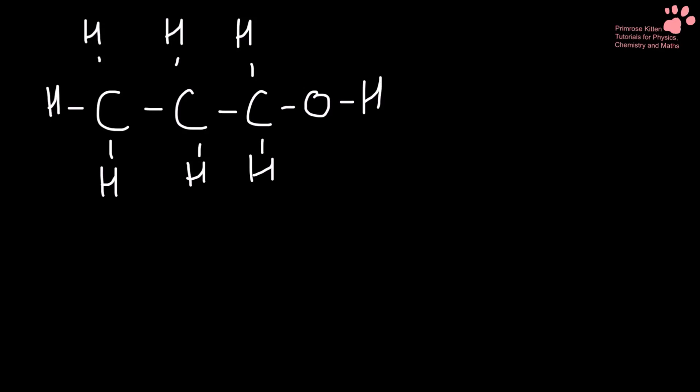When we think about naming alcohols, we need to think about naming alkanes. So here we have one, two, three carbons. And you should know that the alkane that has three carbons is propane. But we have this alcohol group on the end here. So what we need to do is to get rid of this E off the end and replace it with an O-L. So that propane becomes propanol.